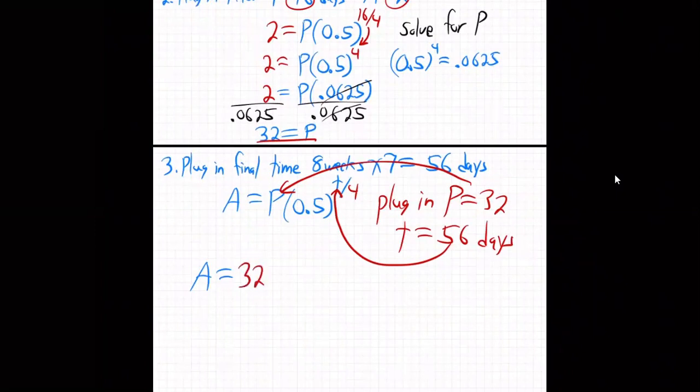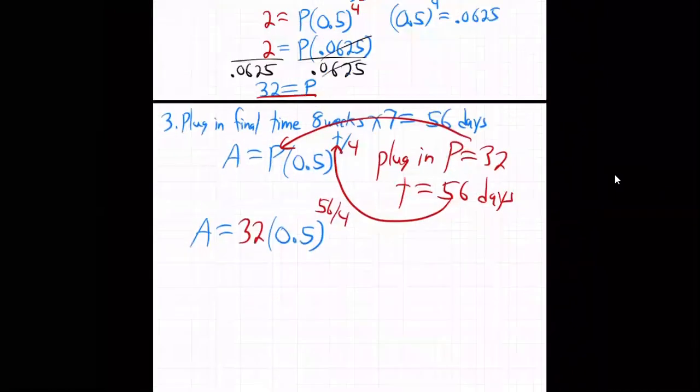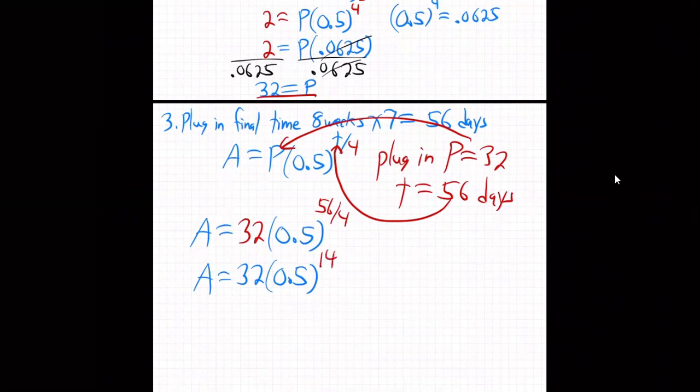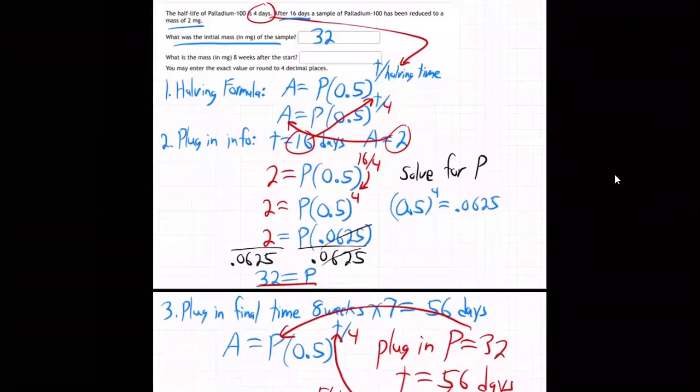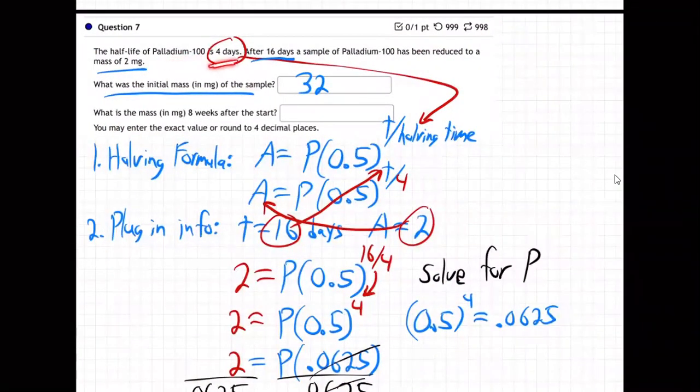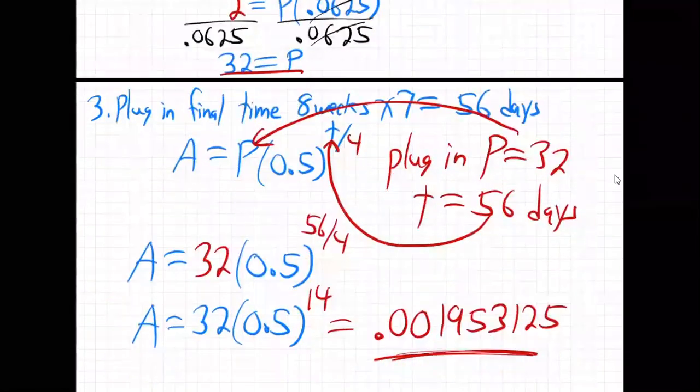It'd be 32 times 0.5 to the 56 over 4. That's 32 times 0.5 to the 14th. Hit the buttons on your calculator. I'm getting 0.001953. So not very much is left after 8 weeks. This stuff goes away pretty quick. This Palladium-100, every four days half of it goes away. After 8 weeks it's almost gone.